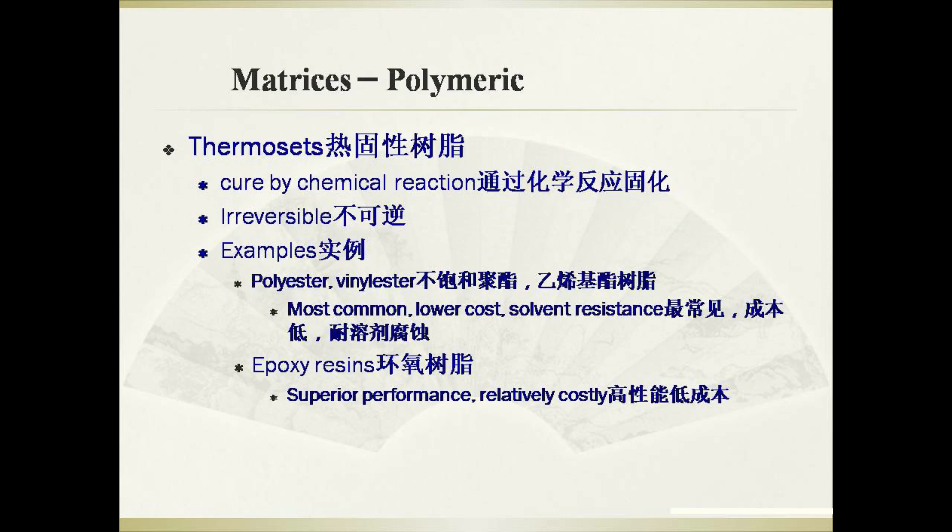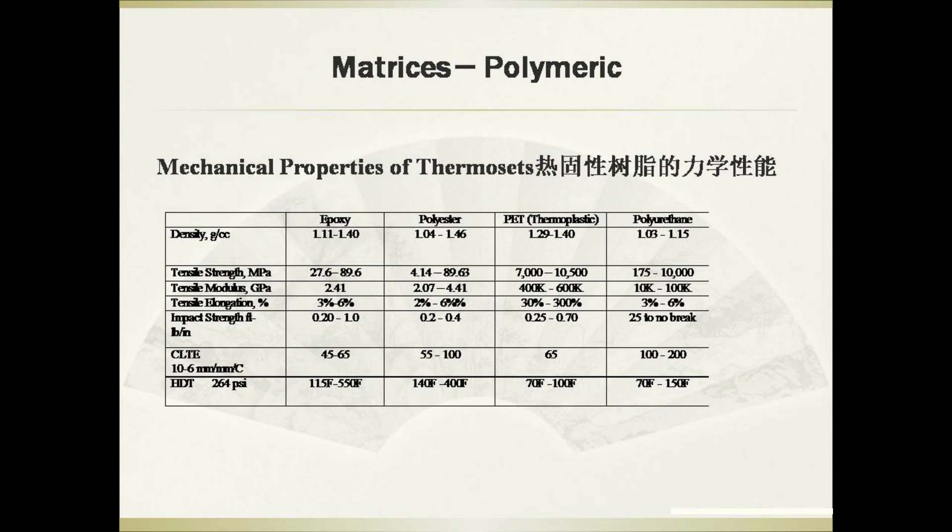Thermosets are an important kind of matrix. They can be cured by chemical reactions, and the chemical reactions are irreversible. Examples of thermosets are polyester and vinyl ester, which are the most common thermosets with lower cost and high solvent resistance. Another example of thermosets is epoxy resins, which have superior performance and relatively low cost. This chart demonstrates the mechanical properties of the most commonly used thermosets.